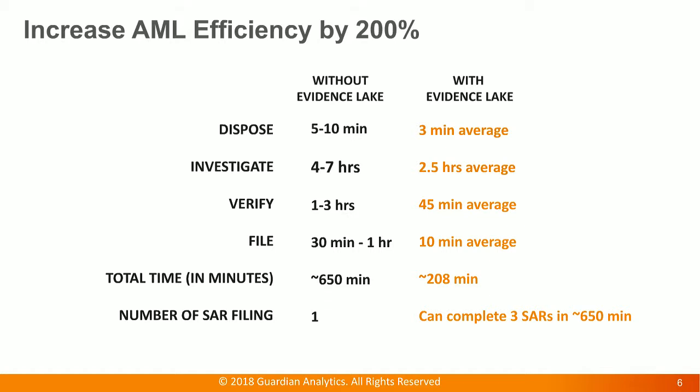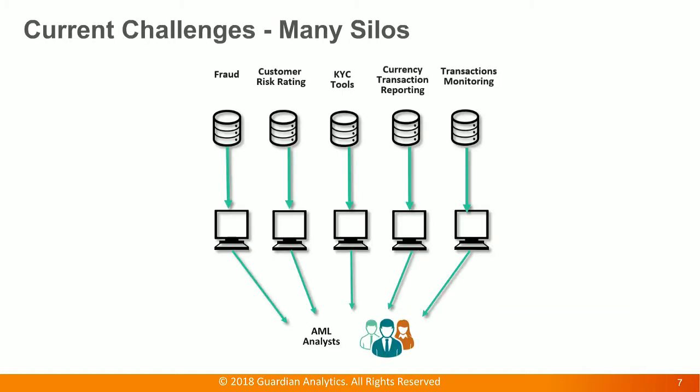So how do we go about doing that? First of all, we need to understand the current challenges that are leading to investigation time being so long. Most of the data right now are siloed. You have fraud data separated from customer risk rating, separated from KYC tools. The CTR is sometimes separated from transaction monitoring. All those silos of data come with their own screen panels, so you have to jump through multiple screens to perform an investigation. And that is one of the biggest problems.